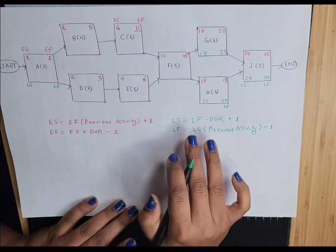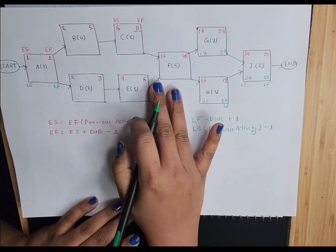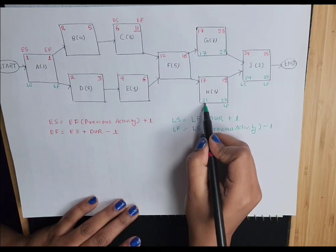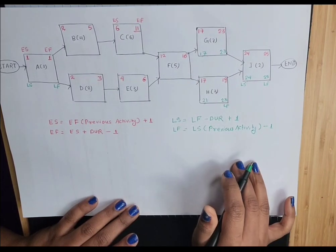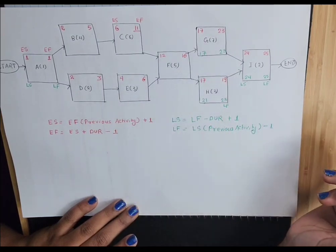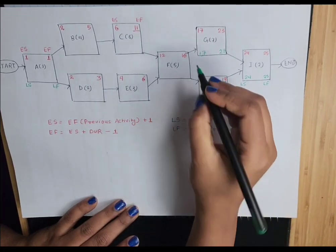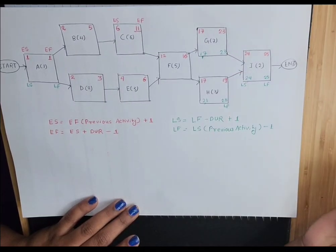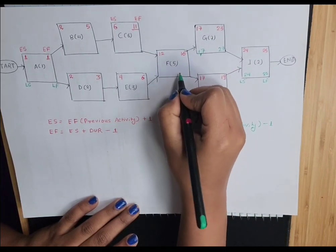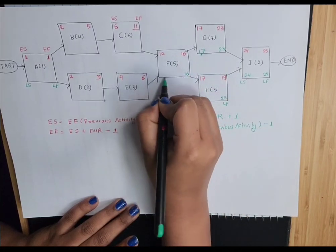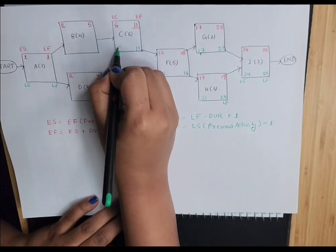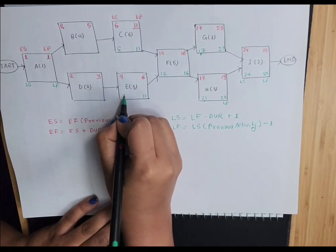Here you have to be very careful again when calculating late start and late finish for activity F. As you can see, there are two late start values: 21 and 17. While moving backward, you always take the smallest number. Here 17 is the smallest, so we take 17. So the late finish for F will be 16 and late start will be 12.